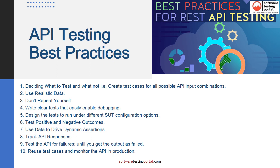API testing best practices include: 1. Deciding what to test and what not to. 2. Use realistic data. 3. Don't repeat yourself. 4. Write clear tests that easily enable debugging. 5. Design the tests to run under different suite configuration options. 6. Test positive and negative outcomes. 7. Use data to drive dynamic assertions. 8. Track API responses. 9. Test the API for failures until you get the output as failed. 10. Reuse test cases and monitor the API in production.